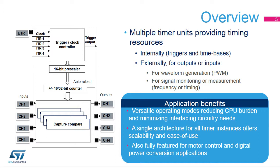This update event triggers the transfer from preload to active registers for multiple parameters, in particular for the clock prescaler, auto-reload value, compare registers, and PWM mode. An 8-bit programmable repetition counter allows you to decouple the interrupt issuing rate from the counting period, and have, for instance, one interrupt every single, second, third, and up to 256th PWM period. This is particularly useful when dealing with high PWM frequencies.